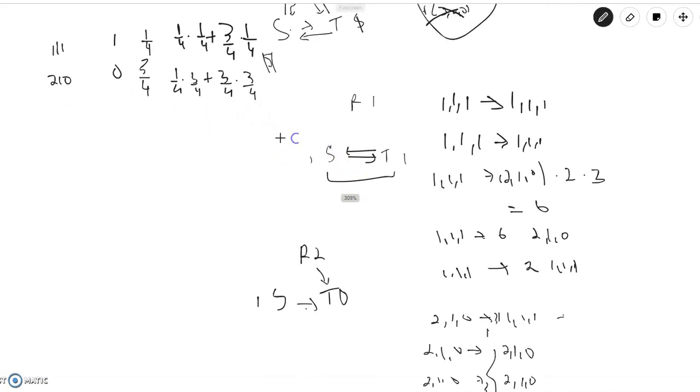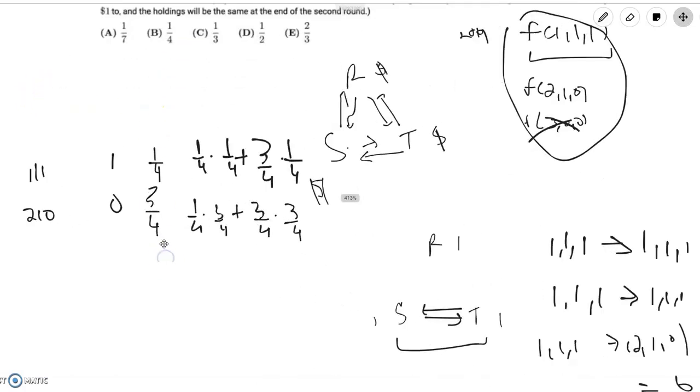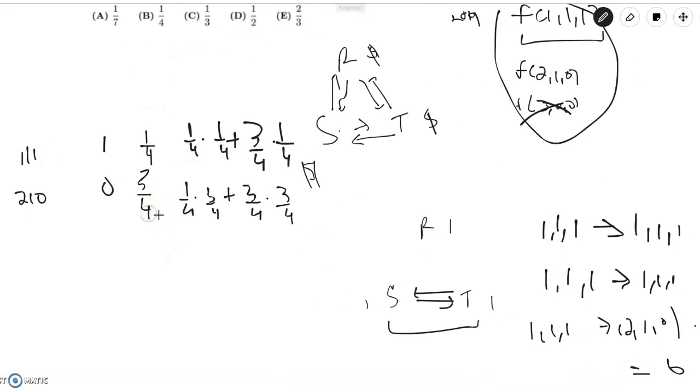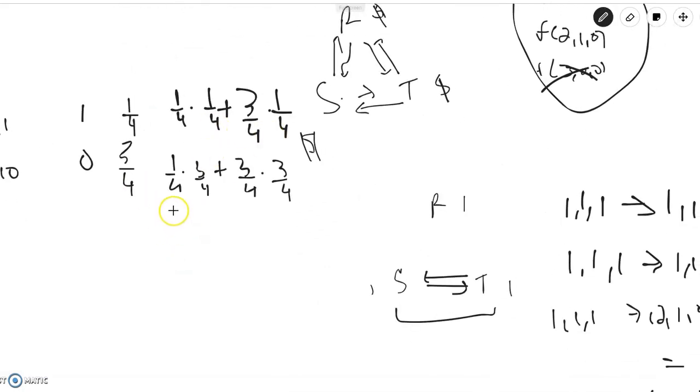And this is because from two one zero, in three of the four possible ways, you're going to go back to two one zero, and in one out of the four possible ways, you'll go back to one one one. And so this is equal to this upper part is equal to one fourth, and this lower part is equal to three fourths after its returns.